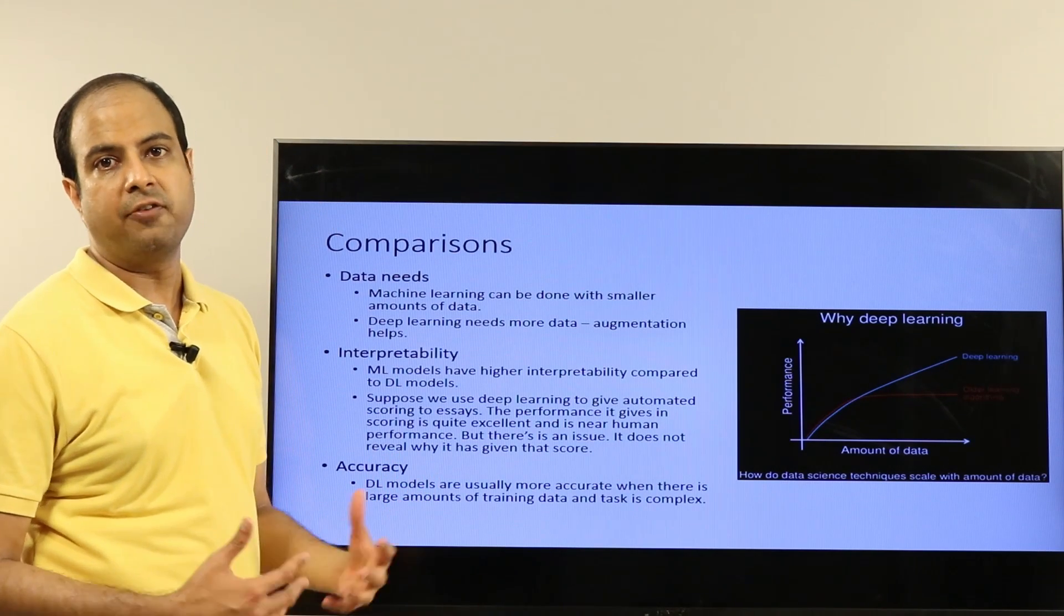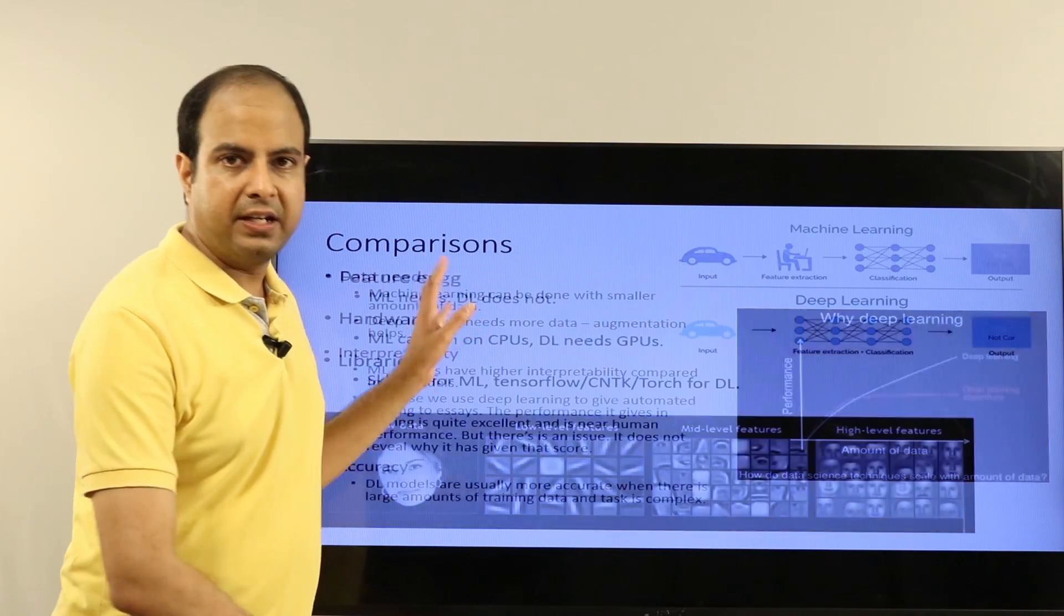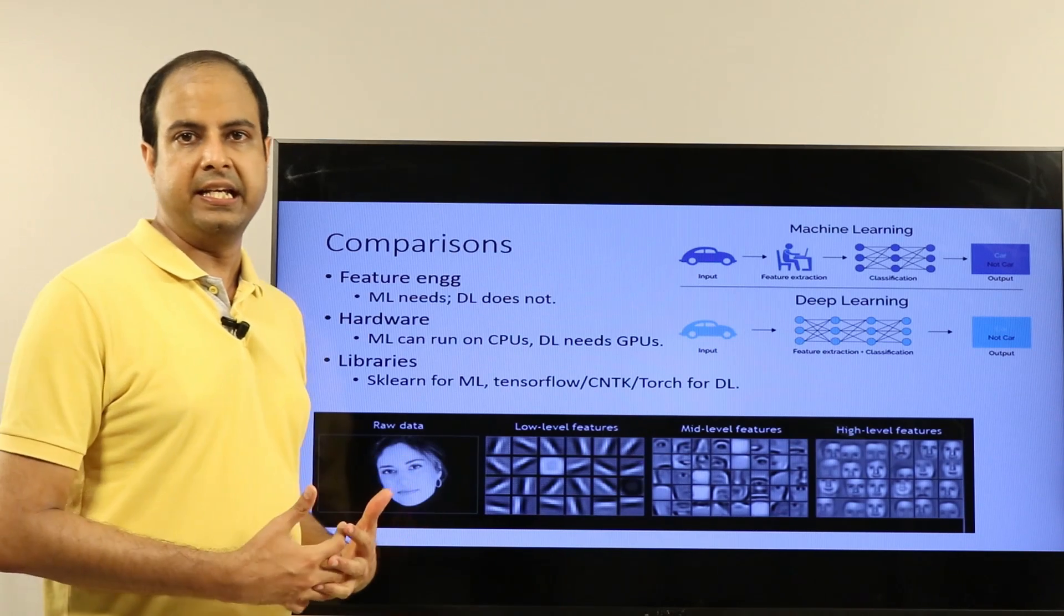Using traditional machine learning, you can still come up with diagnostics as to why the decision has been made. So interpretability in typical machine learning models has been high, but in deep learning models interpretability is low.